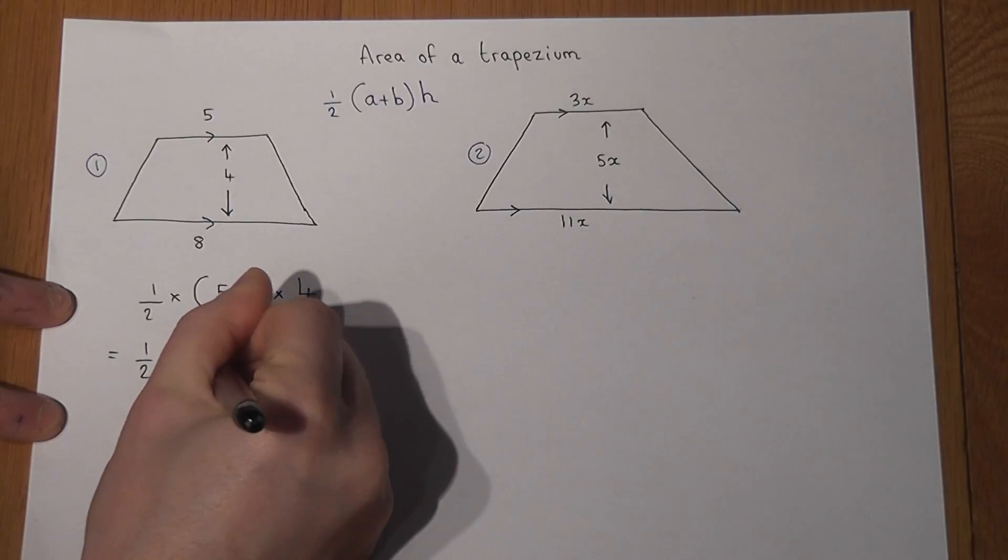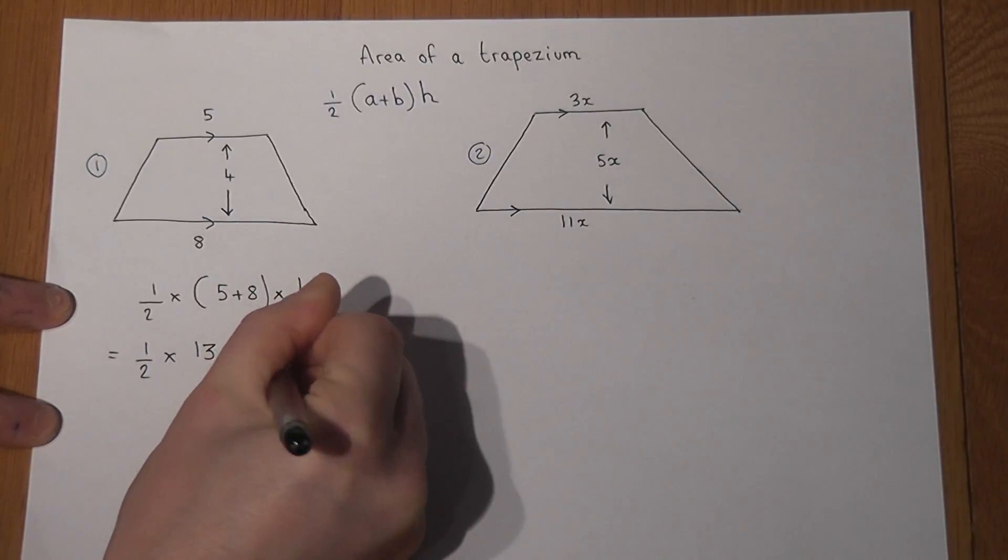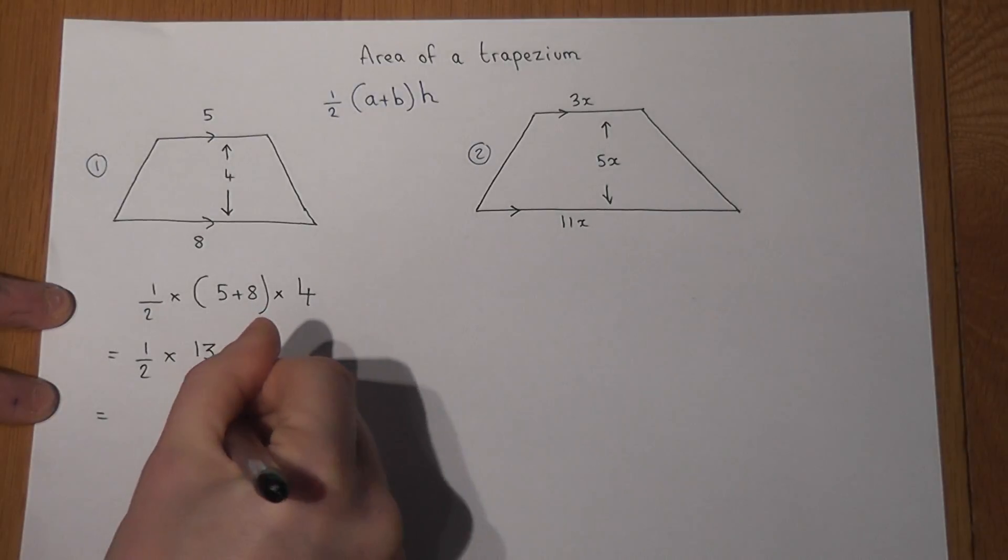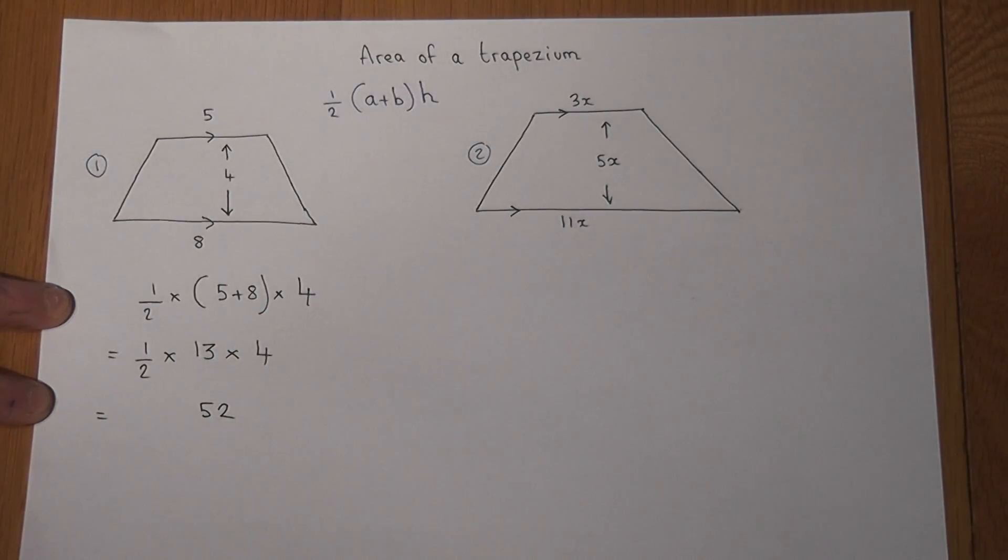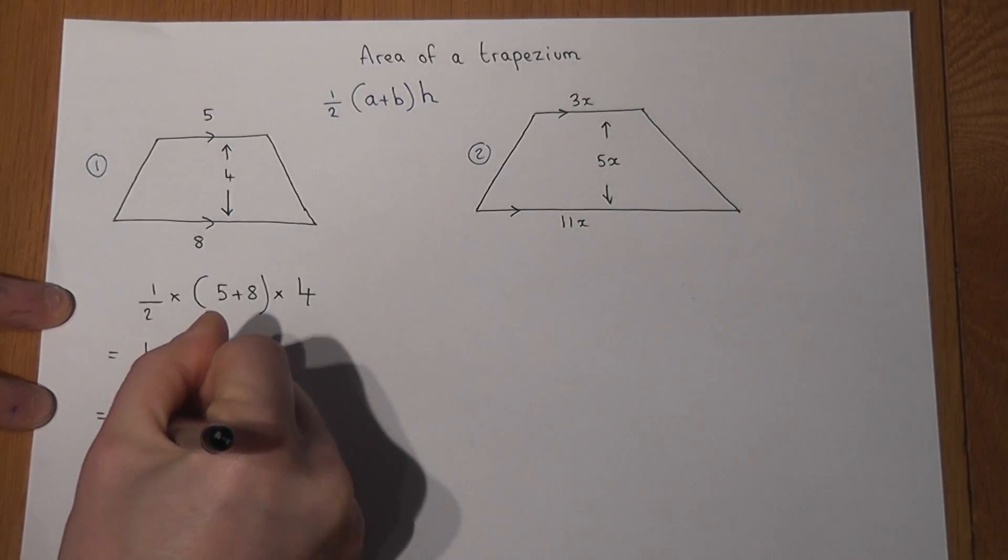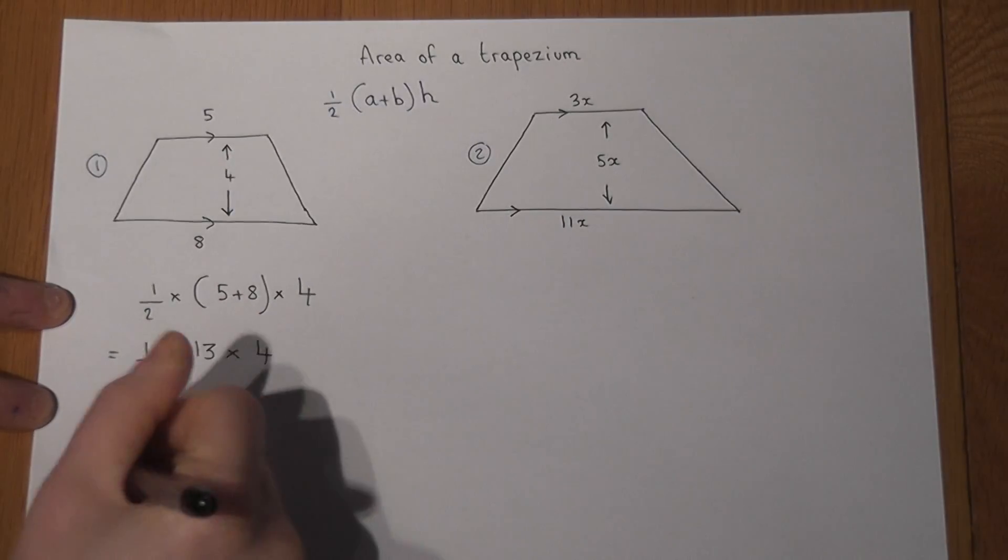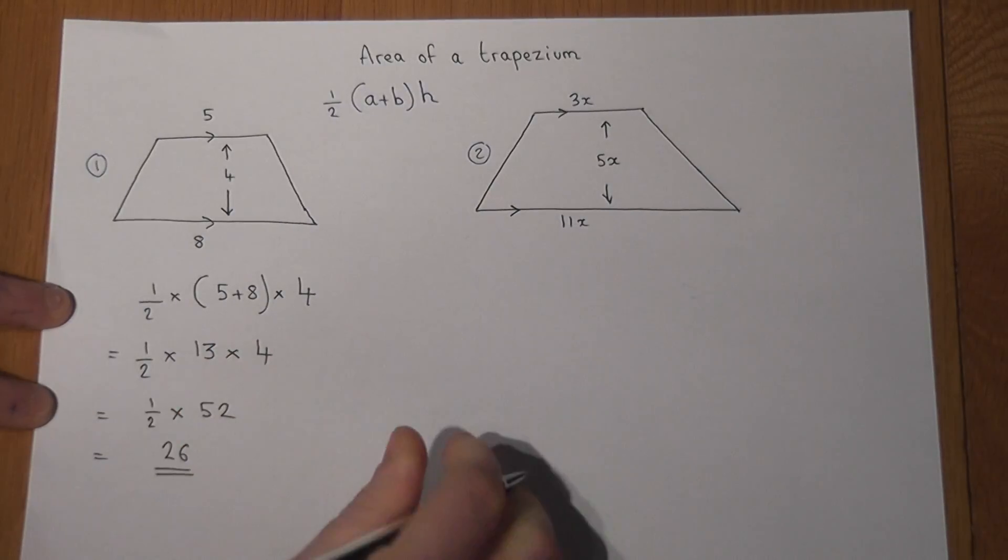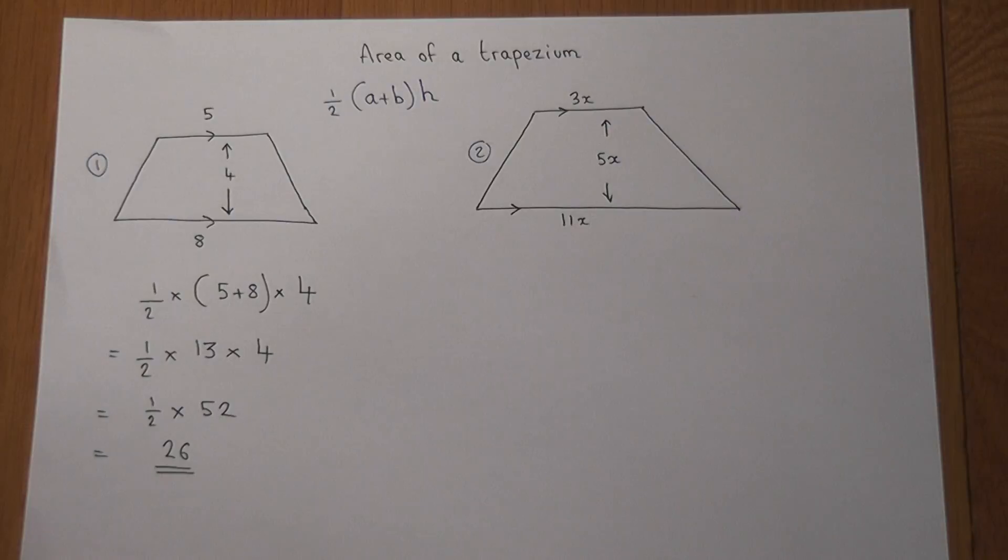Now five plus eight is just thirteen times by four, and then thirteen times four is fifty-two, so it's just a half of fifty-two, which in this case works out to be twenty-six units squared. There were no units in the original question, so all we do is add the parallel sides, times by the height, and then divide in the end by two.